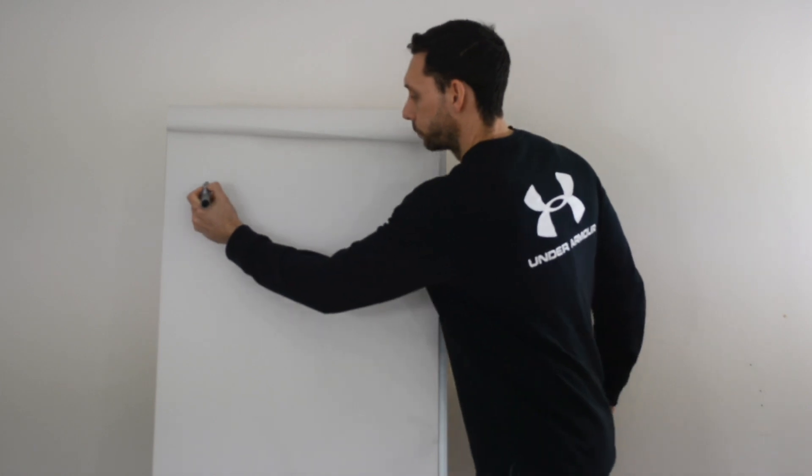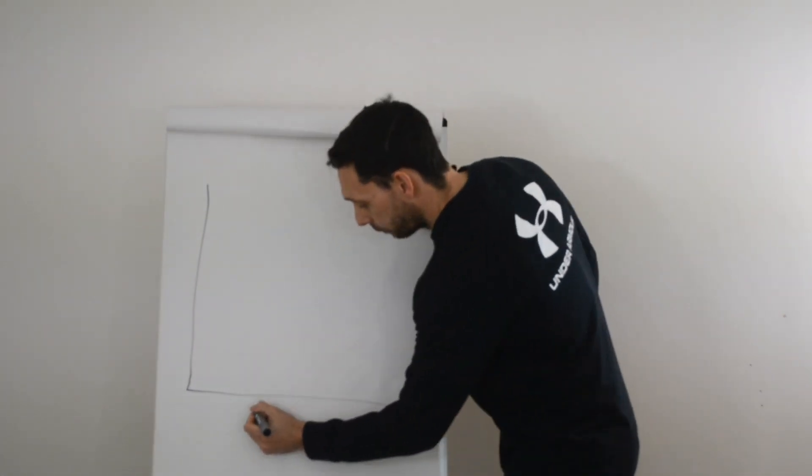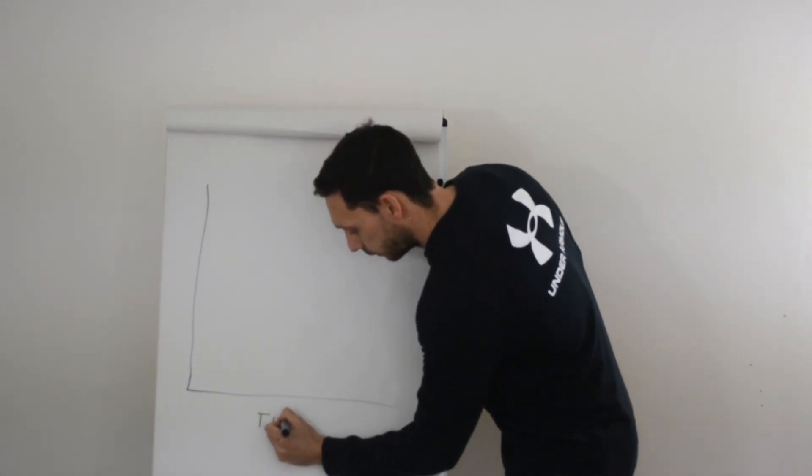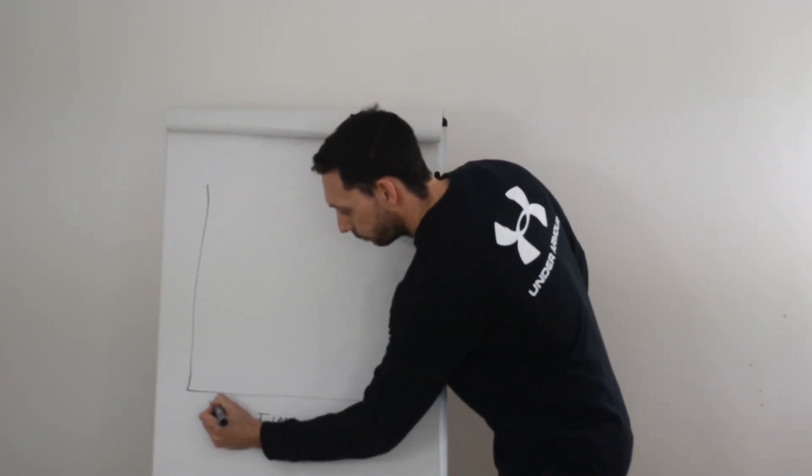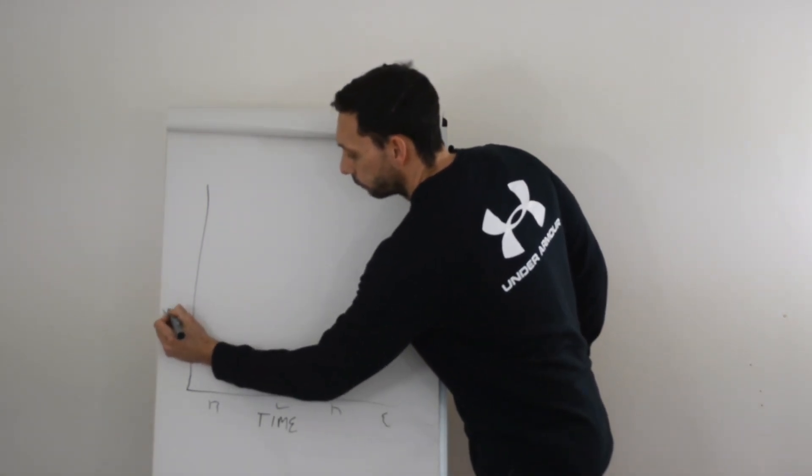Let's start with black. So anyone that watches the videos knows I like a graph. So here we have the time of the day. So we have breakfast, lunch, dinner, evening. Here we have your glucose levels.